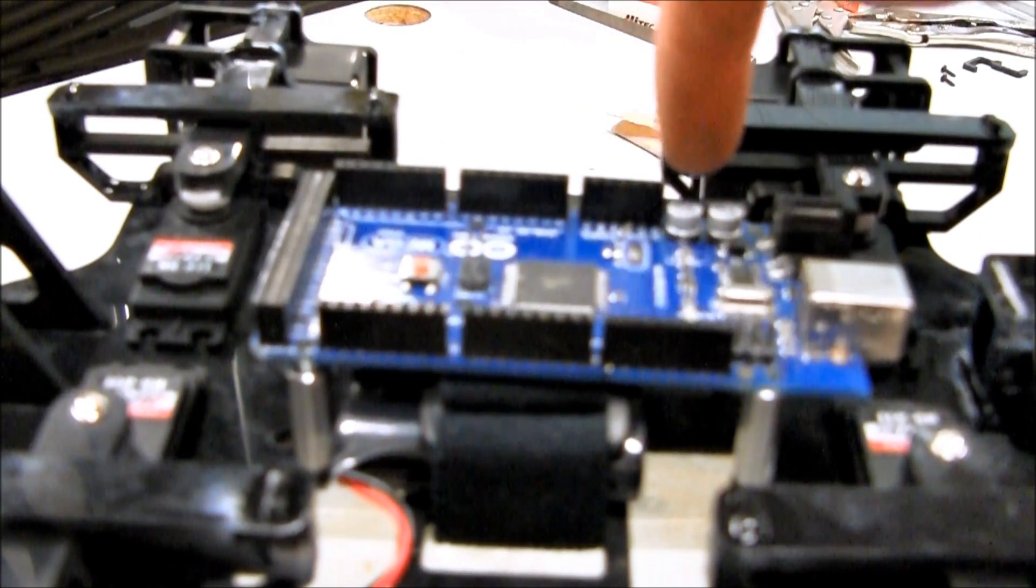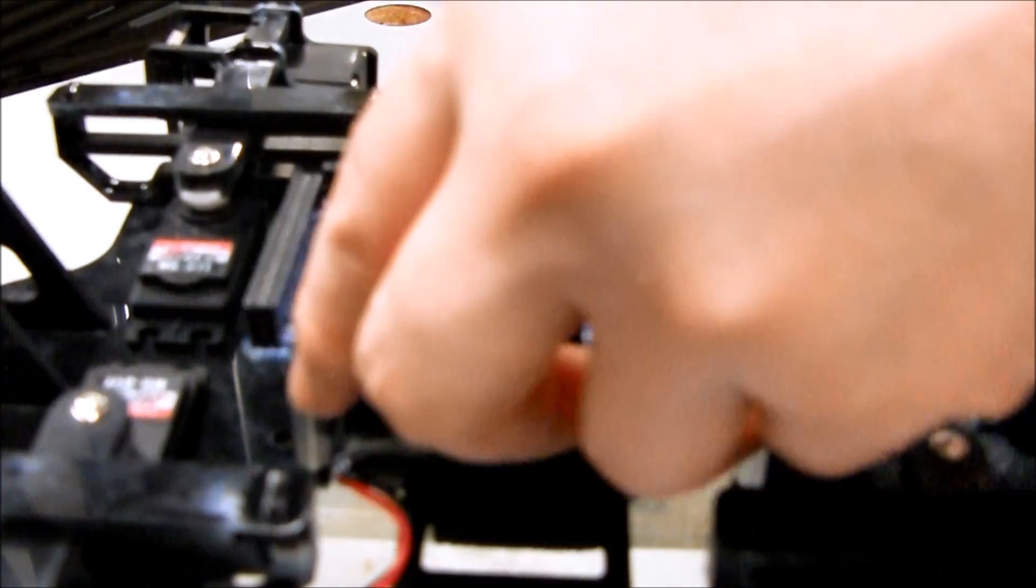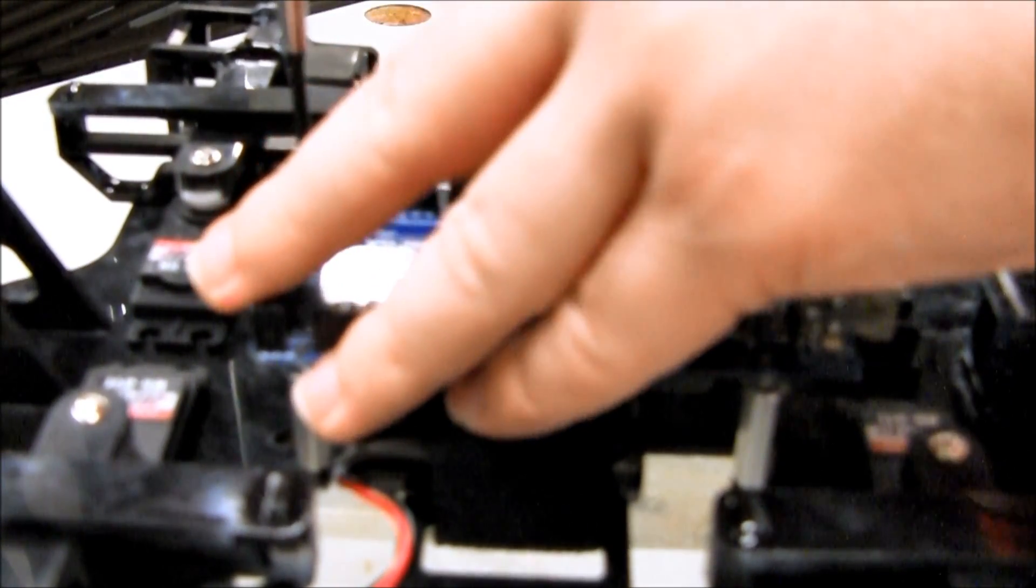Notice the two holes pointed to. One M3 screw will be attached through each of these holes to be attached to the standoffs. Since the Arduino does not allow for screws to be attached through the other two holes, the standoffs prevent cantilevering off the previously screwed standoffs.